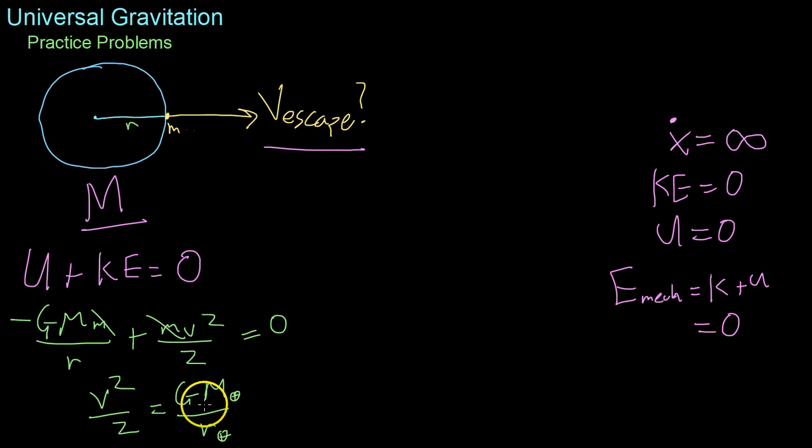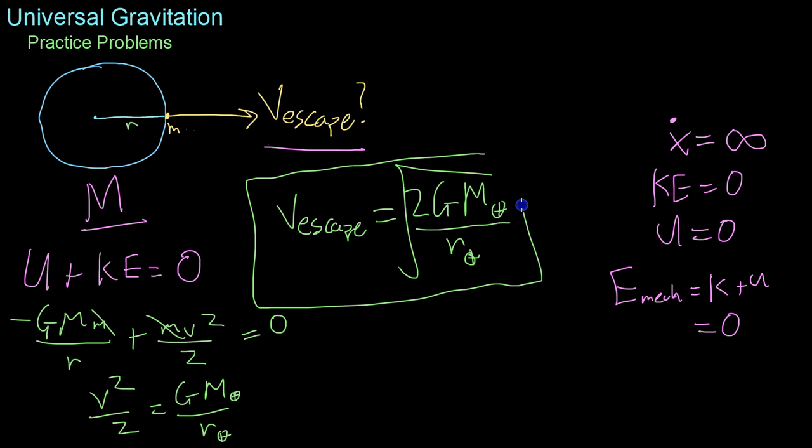Now, moving this two upwards and taking the square root, we get that the escape velocity of the Earth equals two times G times the mass of the Earth over the radius of the Earth, all square rooted. And this is the escape velocity from the surface of the Earth. To find the escape velocity from various points in orbit, all you have to do is increase this radius to r plus whatever your height above the surface of the Earth, h is.